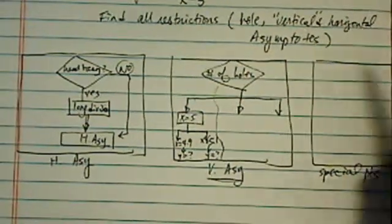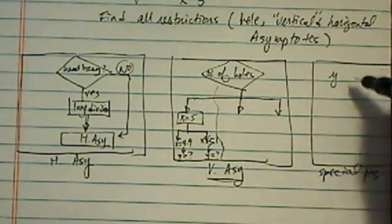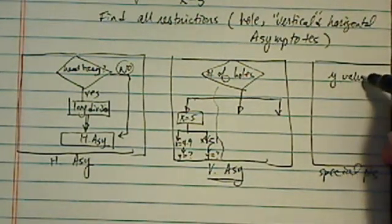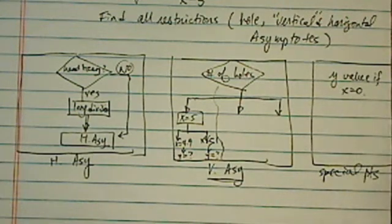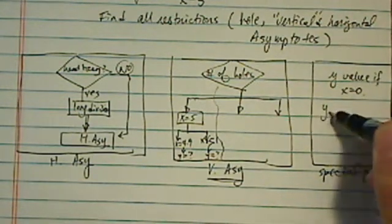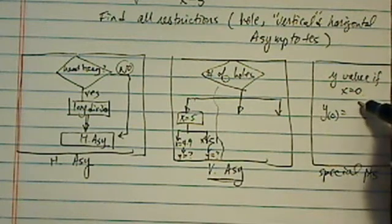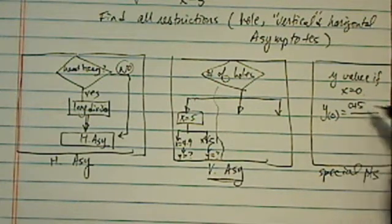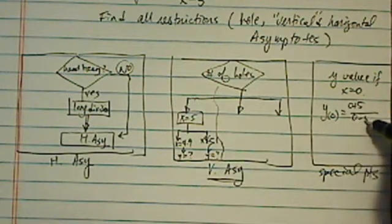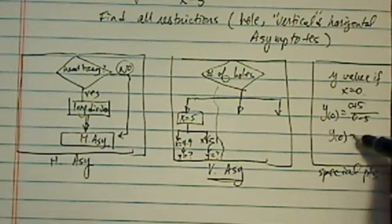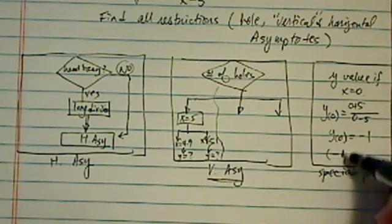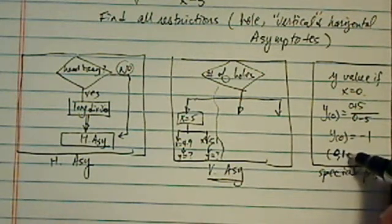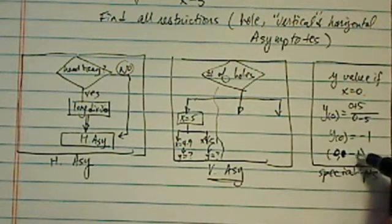And for special points, this typically is when you find y value if x equal to 0. For this case, it's pretty easy. So y at 0 is equal to 5 divided by 0 plus 5 and 0 minus 5. So y at 0 is equal to minus 1. So the special point for us is 0 and minus 1.